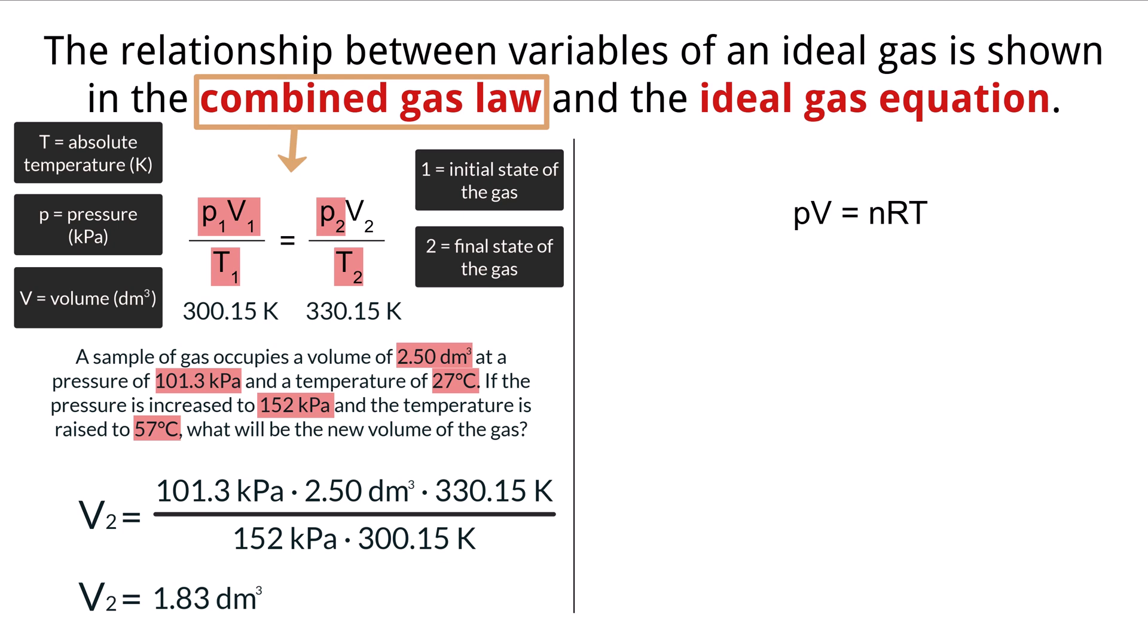This equation again works well when comparing different states of the same gas using those three variables. But what if you also take into account our fourth variable, moles. To do this, we must use a different equation called the ideal gas equation, which is written as PV equals nRT.